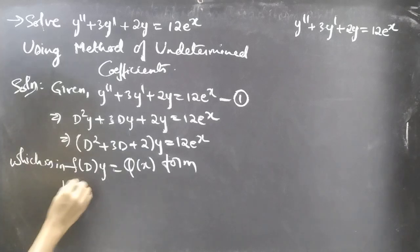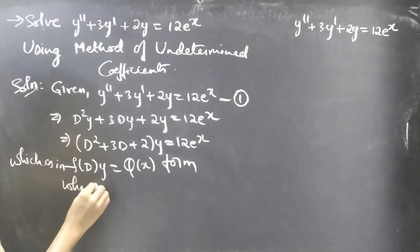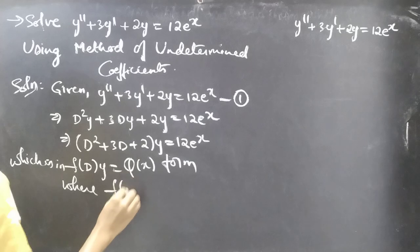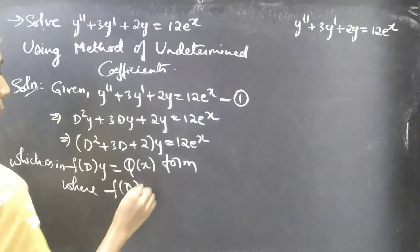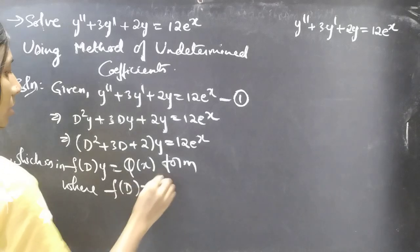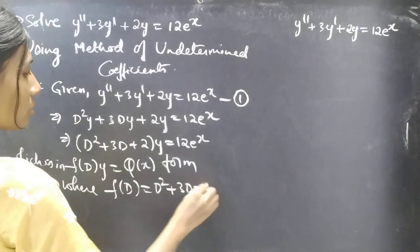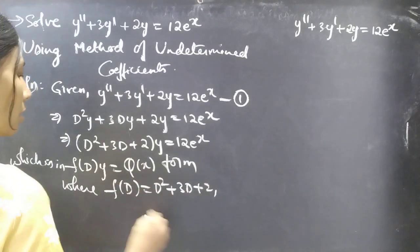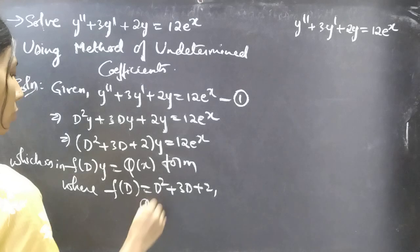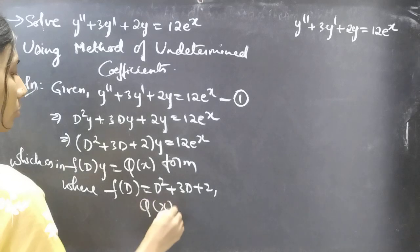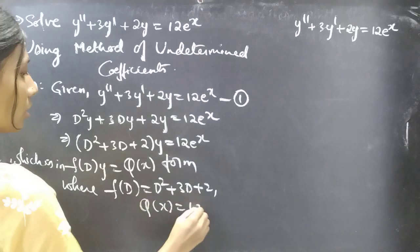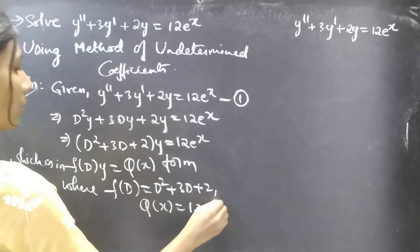Where f(D) = D² + 3D + 2 and Q(x) = 12e^x.